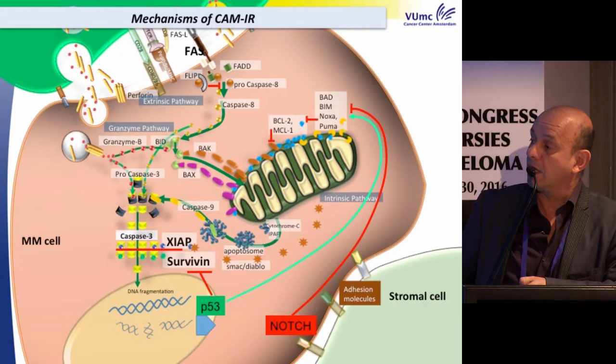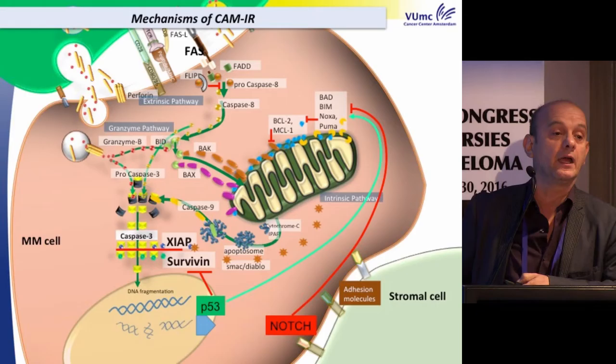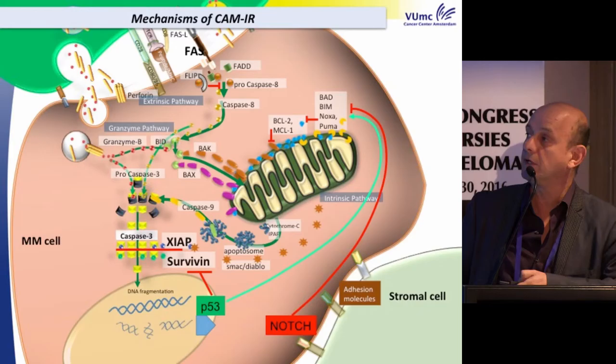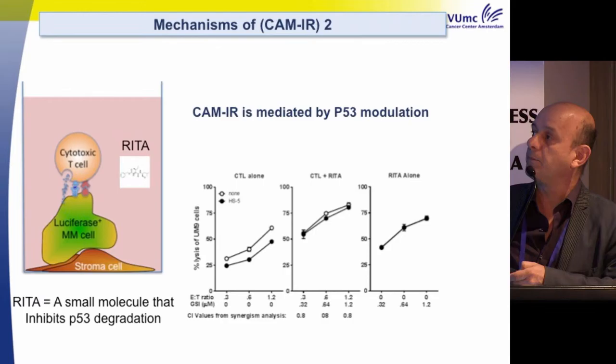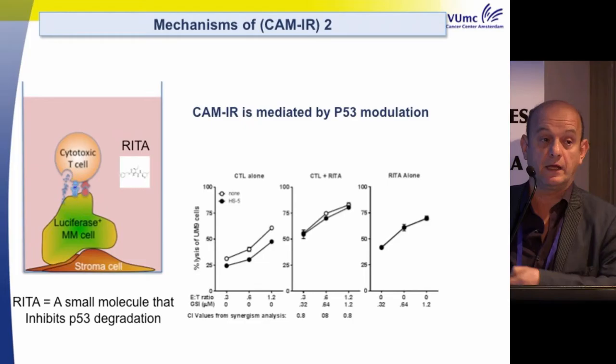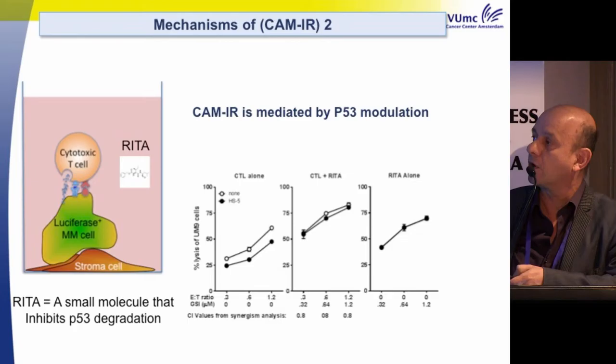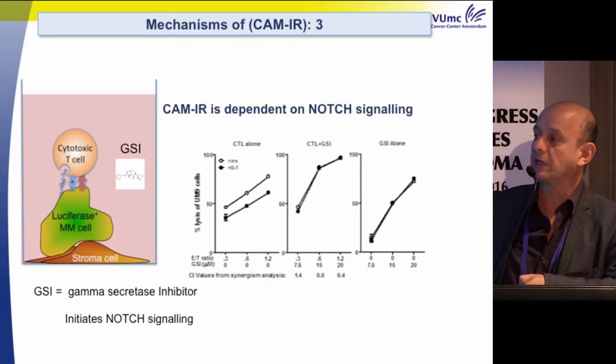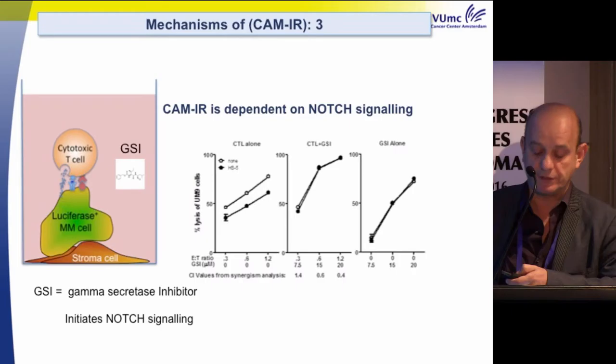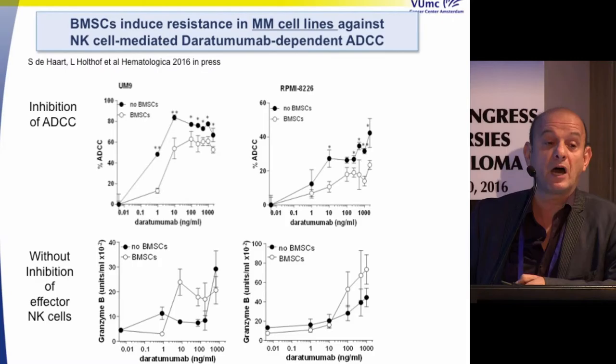We also showed that Notch and p53 are involved in this system. Using a p53 activator abrogates the immune resistance, similar to what we showed with YM155. Similarly, inhibiting Notch signaling with a gamma-secretase inhibitor (GSI) also abolishes this immune resistance — demonstrating multiple molecular mechanisms underlying microenvironment-induced CTL resistance.